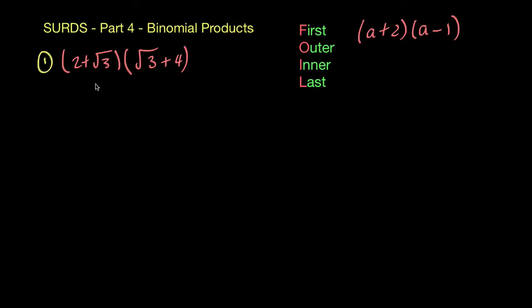Binomial products with surds are expanded exactly the same way as other binomial products. Over here on the right I've got a quick example. You might have heard of FOIL, where you look at the first terms, the outer ones, the inner ones, and the last ones, and multiply them all together.